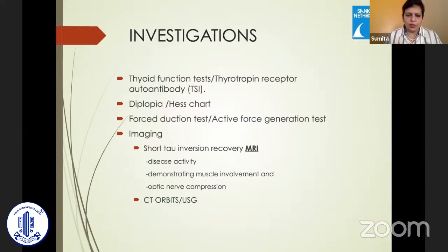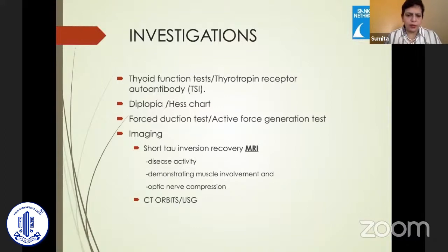These are the investigations to perform in these patients. Imaging is very important and shows tendon-sparing fusiform enlargement of the muscle. Short tau inversion recovery (STIR) MRIs often give a clue about disease activity, which plays an important role in timing of strabismus surgery. It demonstrates muscle involvement and also gives an idea about optic nerve compression.